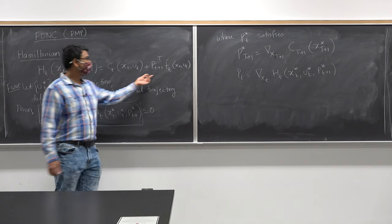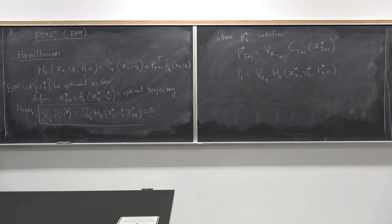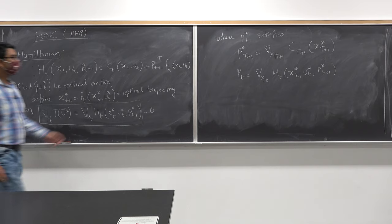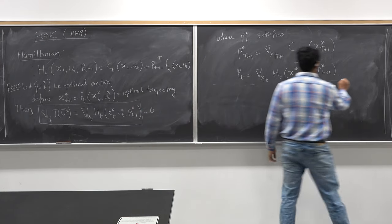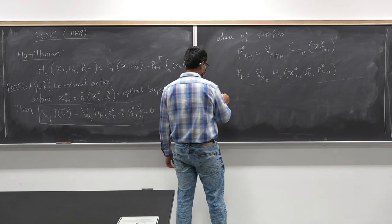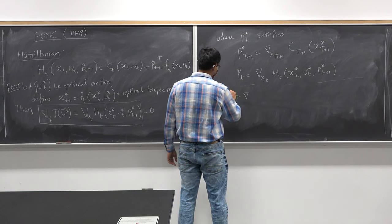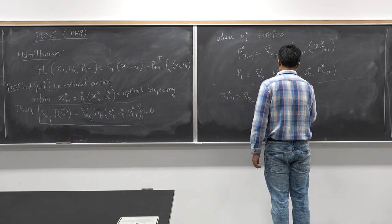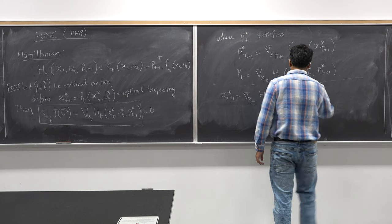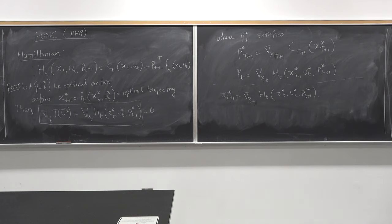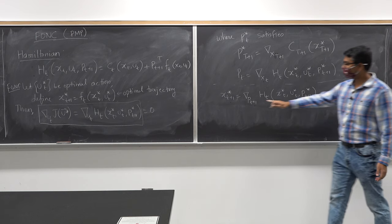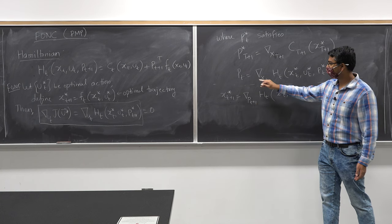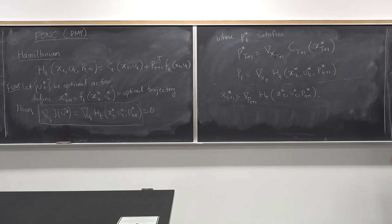What's the gradient of the Hamiltonian with respect to p_{t+1}? It is f_t. So x*_{t+1} is the gradient of H_t with respect to p_{t+1}. The cool thing here is that x*_{t+1} is the gradient of the Hamiltonian with respect to the co-state vector, and the co-state vector is the gradient of the Hamiltonian with respect to the state. That's a cute observation.